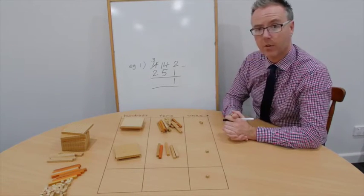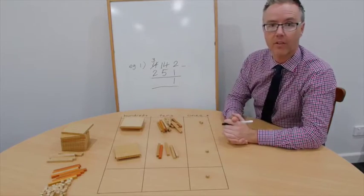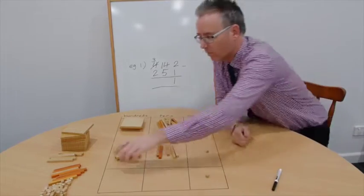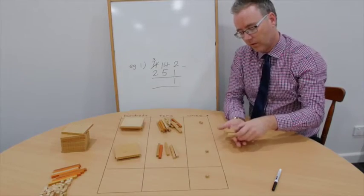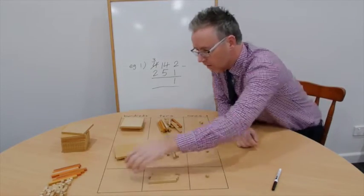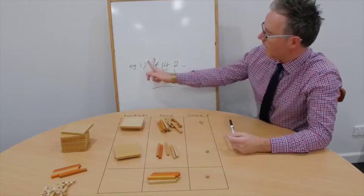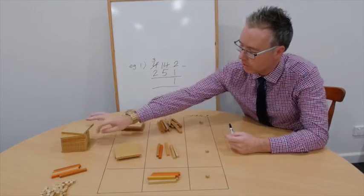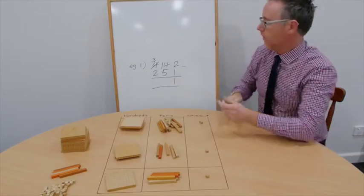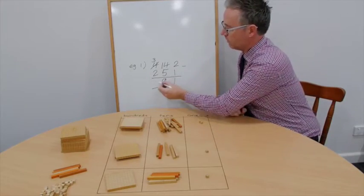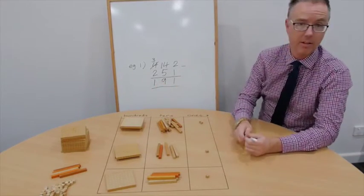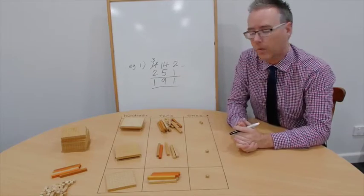Now we can actually work out 14 take away 5 is 9. 1, 2, 3, 4, 5, 6, 9. And 3 take away 2 is 1. And there's our answer, 191. Let's do another one.